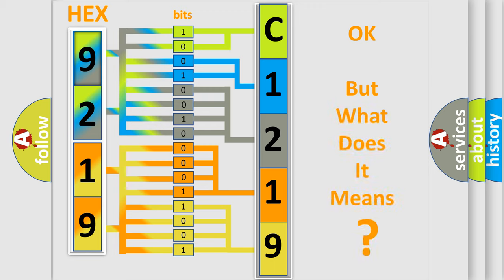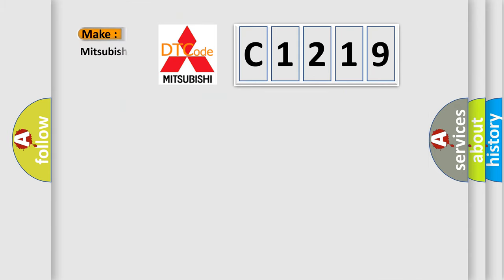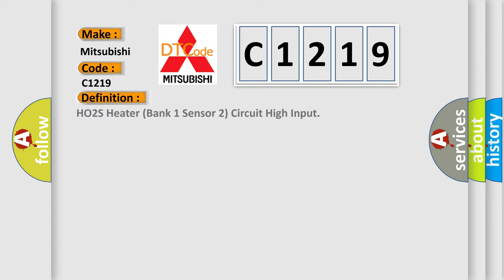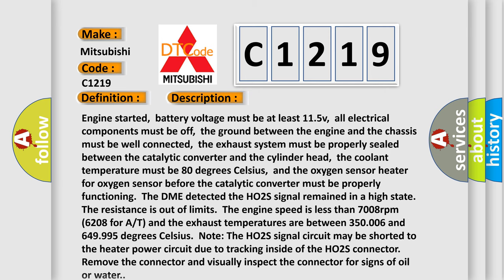The number itself does not make sense to us if we cannot assign information about it to what it actually expresses. So, what does the diagnostic trouble code C1219 interpret specifically for Mitsubishi car manufacturers? The basic definition is: HO2S heater bank one sensor two circuit high input. And now this is a short description of this DTC code.